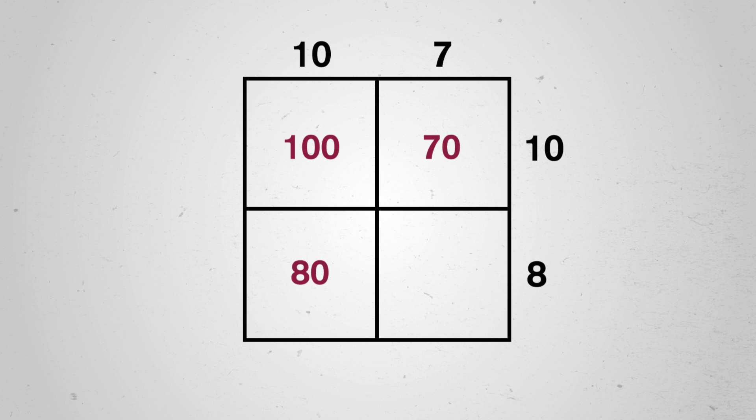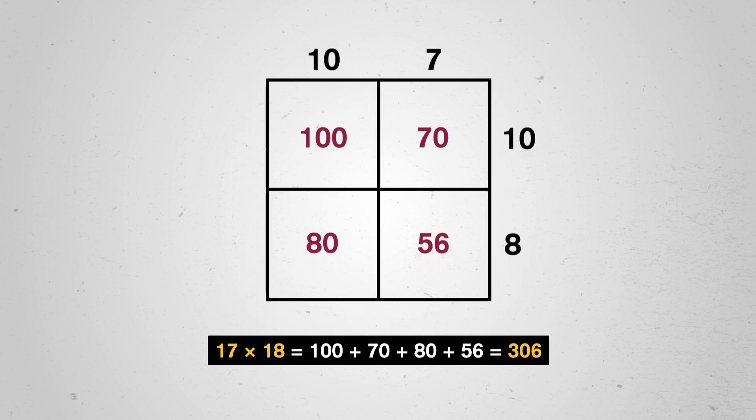So let's look at an example to try to explain why this must be true. We can set up 17 times 18 like we did earlier, where we multiply each bit separately, and then just collect them together at the end. 10 times 10 is 100, 10 times 7 is 70, 10 times 8 is 80, and 7 times 8 is 56.